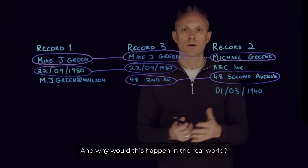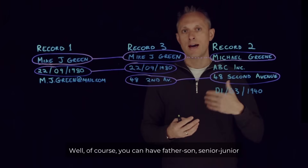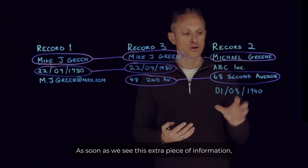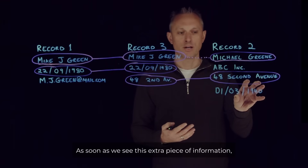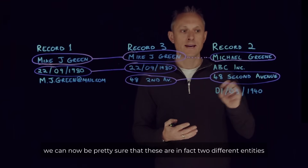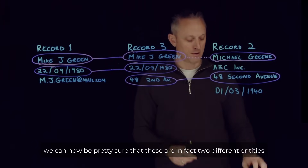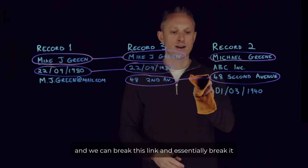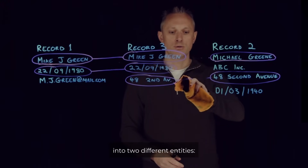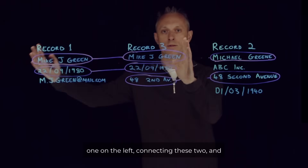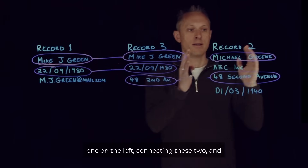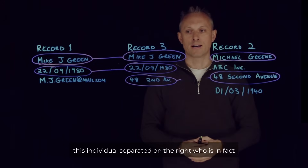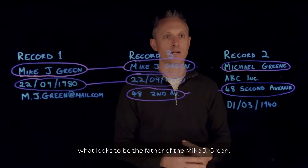Why would this happen in the real world? Well, of course, you can have a father and son — senior and junior — living at the same address. As soon as we see this extra piece of information, we can now be pretty sure that these are in fact two different entities. We can break this link and essentially split them into two different entities: one on the left connecting those two records, and this individual separated on the right, who is in fact what looks to be the father of Mike J. Green.